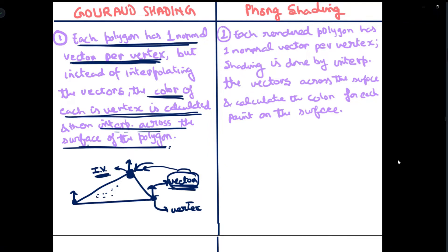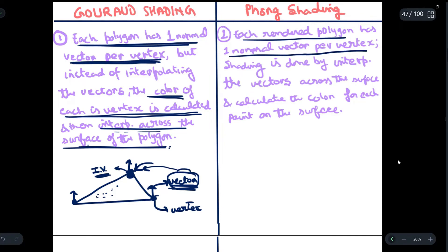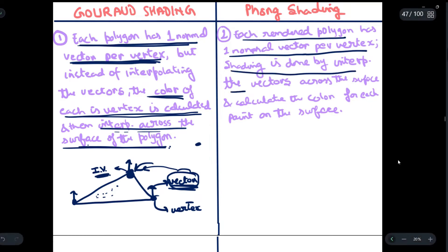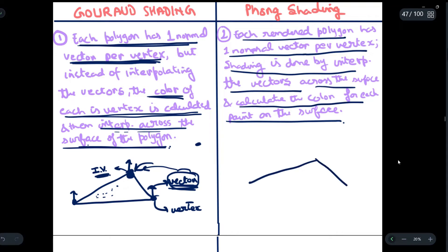Now in Phong shading, suppose we have a rendered polygon and it has one normal vector per vertex, as was the case in Gouraud shading. The difference here is that the shading is done by interpolating the vectors across the surface and then calculating the color for each point on the surface. Consider the same polygon — these are the vectors at each vertex: vector 1, vector 2, vector 3. In Gouraud shading we did not interpolate the vectors, but now in Phong shading we will be interpolating the vectors.